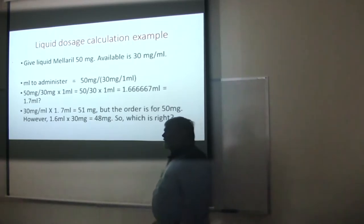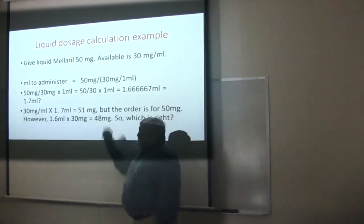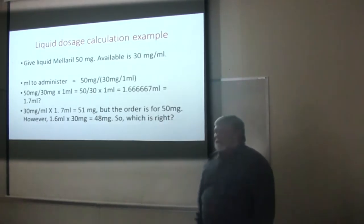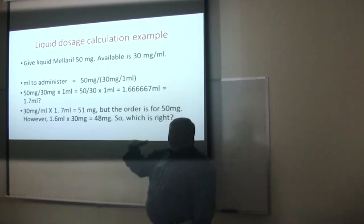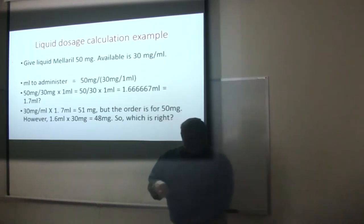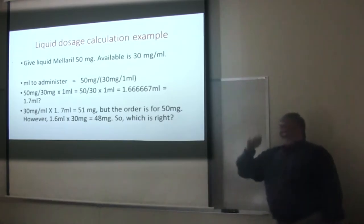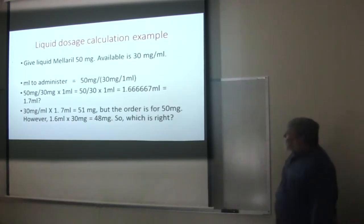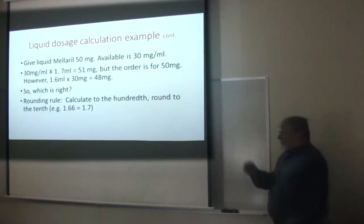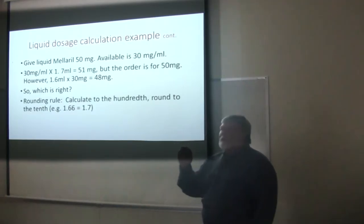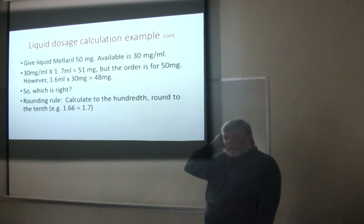Generally rounding in nursing is a little unusual — you will actually give the 1.7 mLs, unless you're on a pediatric or critical care unit where they'll try to get you right on. With oral meds, often that little bit of variance is okay. The question is: can you give 1.666 mLs? What's the tiniest volume you can actually measure accurately with a syringe?